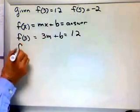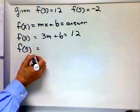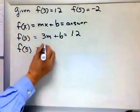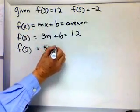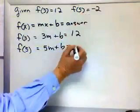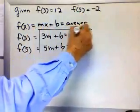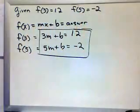Now I'm going to do the same thing with the 5. You think you know how to do that? Where do I put the 5 for the x? So that's going to be 5m plus b equals negative 2. Now here's the cool part. This is a system to solve.